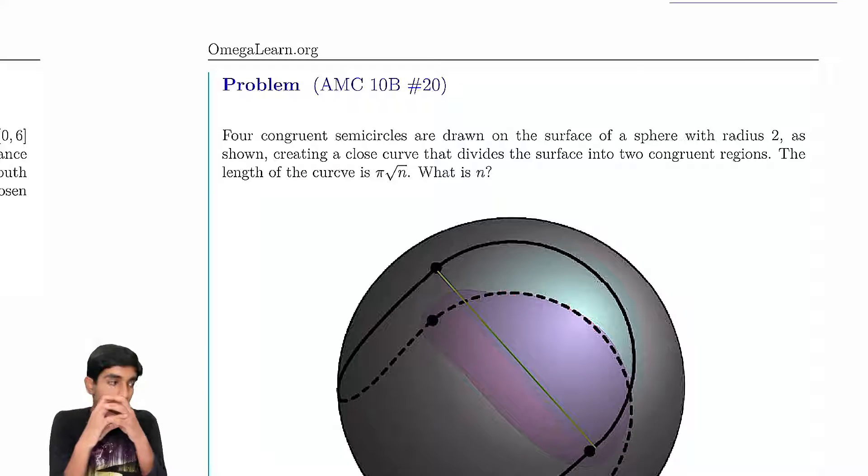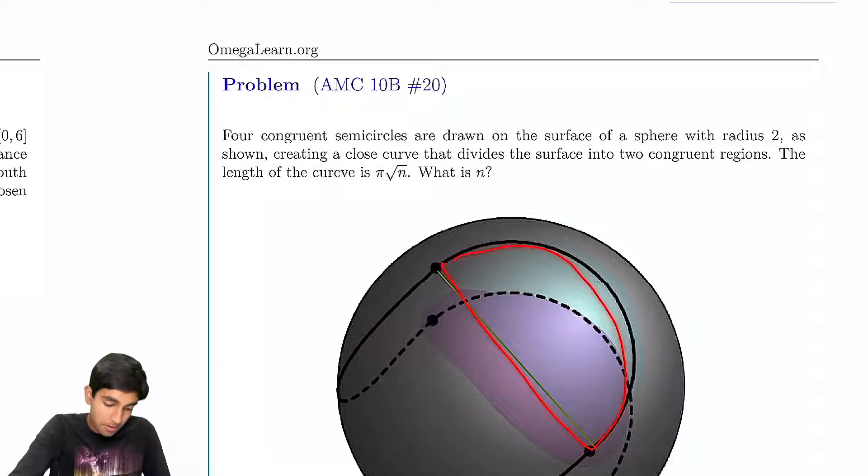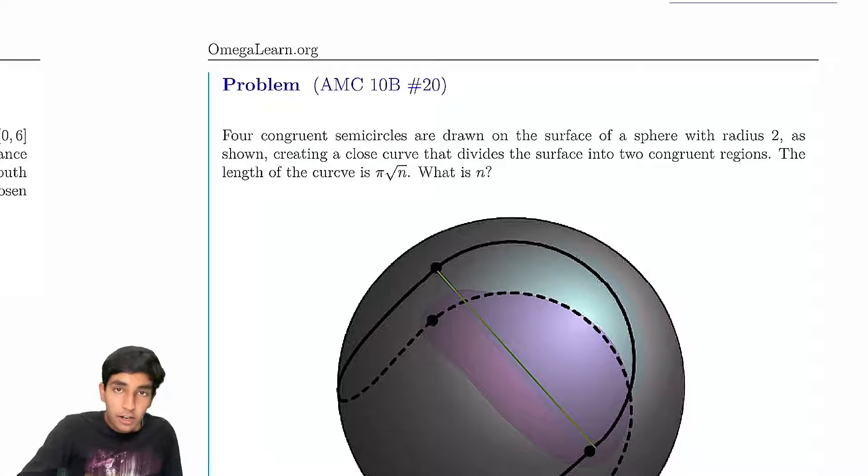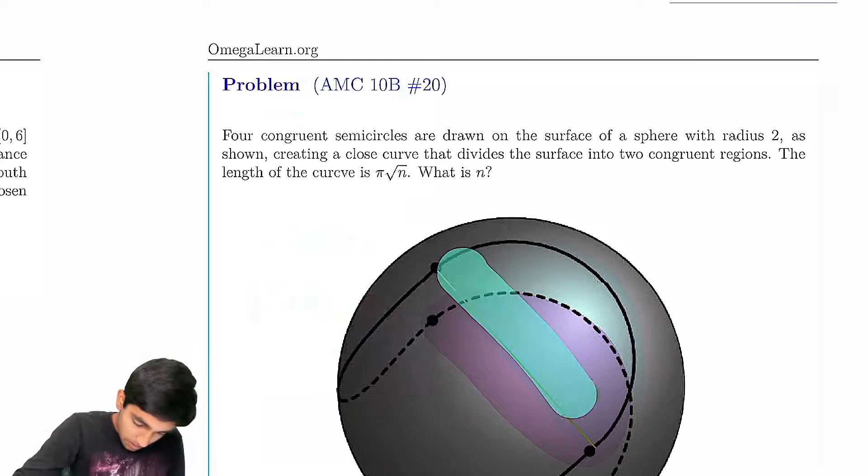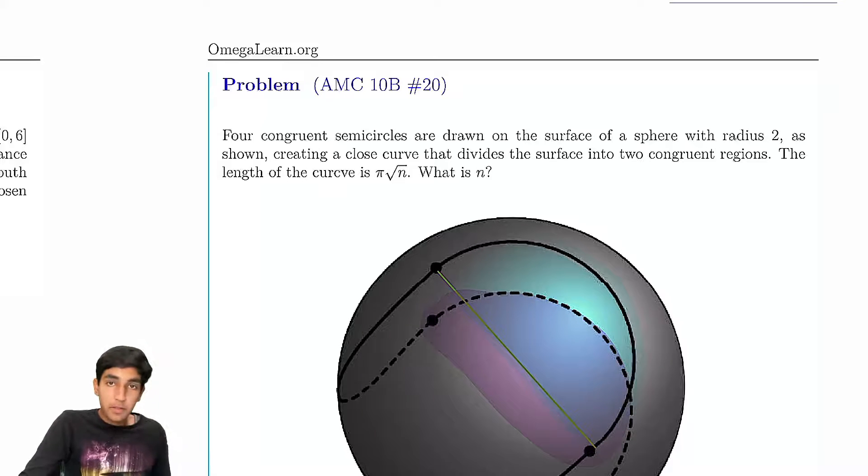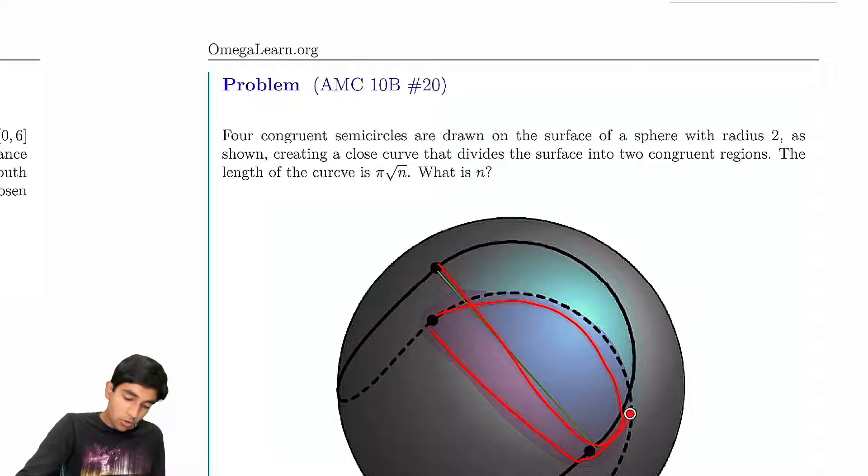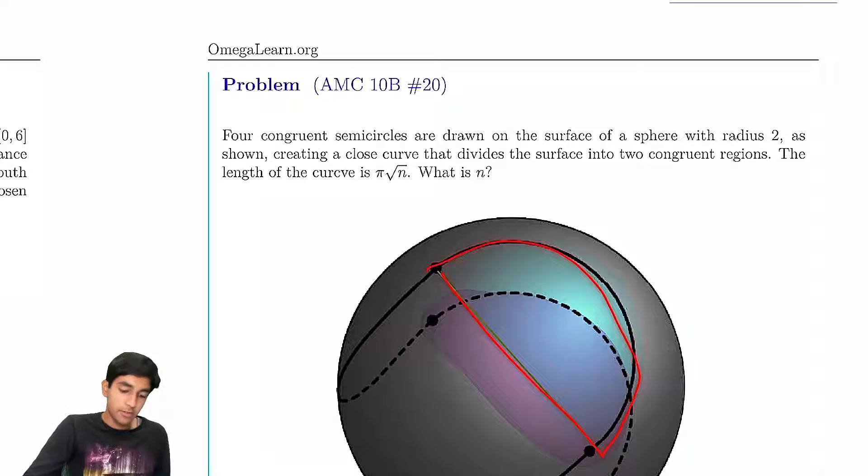It's going to be some kind of weird curved shape. It's going to be like a curve on the sphere bulging out. These regions are very hard to find the surface area of. So how are we possibly going to find out when it divides into two congruent regions?